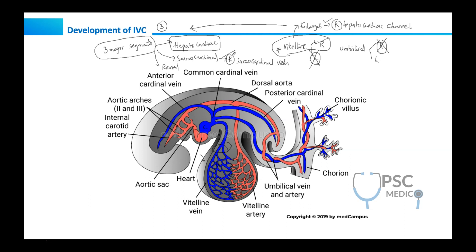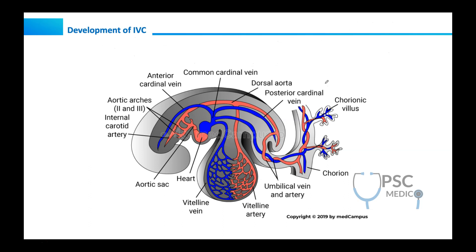Next, the renal segment comes from the right sub-cardinal vein. If you remember this much, it is well and good. So from bottom to top: the renal segment of IVC, followed by the sacro-cardinal segment, and above the kidney we have the hepatocardiac segment. The hepatocardiac segment comes from the right hepatocardiac channel, which comes from the right vitelline vein. The renal segment comes from the right sub-cardinal vein and the sacro-cardinal segment from the right sacro-cardinal vein.